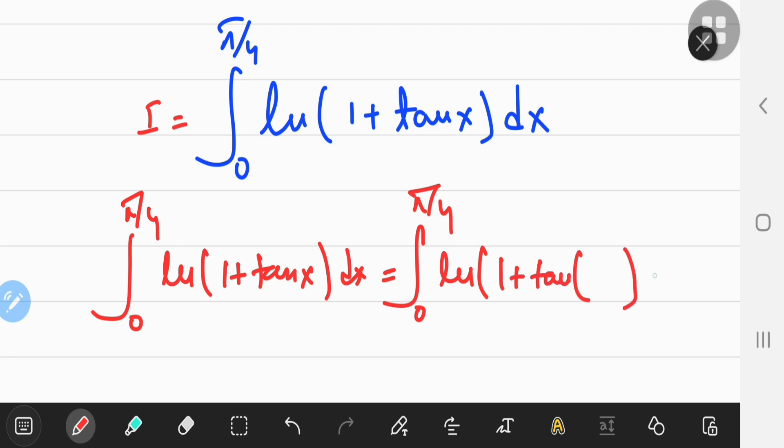So, the integral from 0 to π/4 of the natural log of 1 plus tangent x with respect to x is equal to the definite integral from 0 to π/4 of the natural log of 1 plus the tangent of something with respect to x. And what is this something?